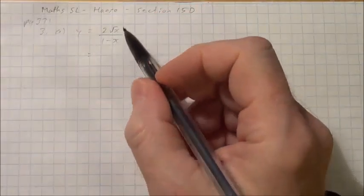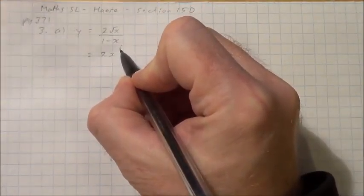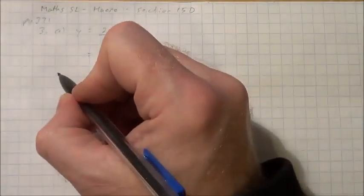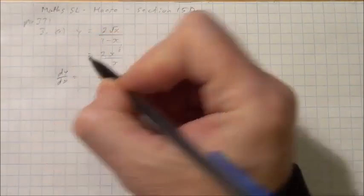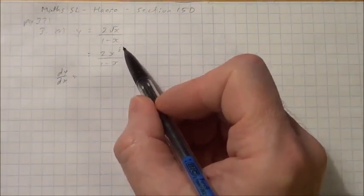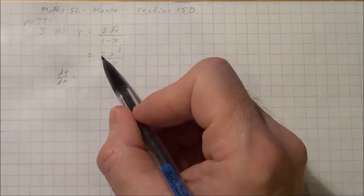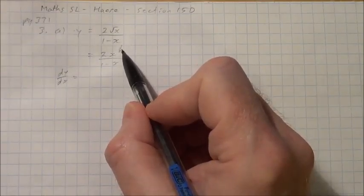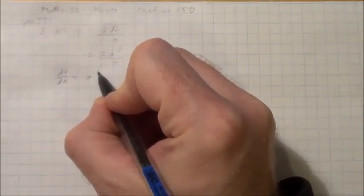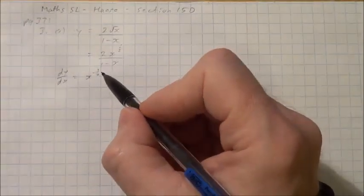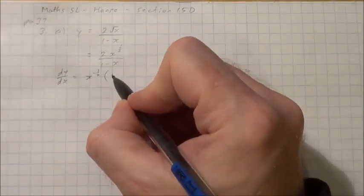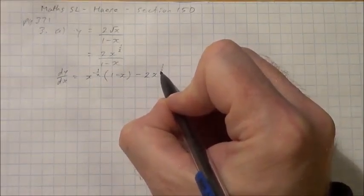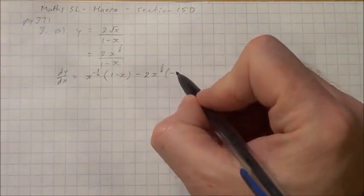First, I'll rewrite this into exponent form. Now I'll take the derivative by differentiating using the quotient rule. I take the derivative of the top, bringing the one-half down in front, which multiplies by the 2, so one-half times 2 is just 1. Leaving the x and subtracting 1 from the exponent leaves me with x to the negative one-half. That's the derivative of the numerator. I then multiply by the denominator, and subtract the numerator multiplied by the derivative of the denominator, which in this case is just negative 1.